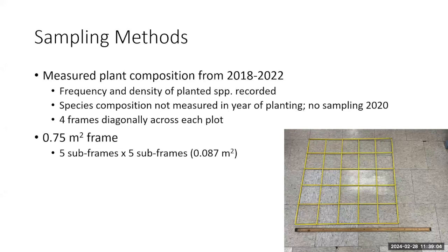For our sampling method, we used a frame to measure plant composition from 2018 through 2022. We recorded the frequency and density of planted species: frequency is the number of times a species was present in one of the 25 squares, whereas density was counting the number of individuals in the entire frame. We didn't measure species composition during the first year of planting. We had four frames set up diagonally across each plot, then aggregated data to the whole plot level before analysis. The frame is three-quarters of a meter squared with a five-by-five subframe grid — 25 total subframes.